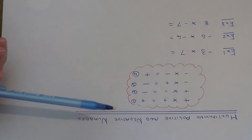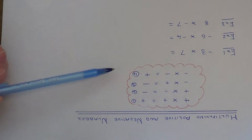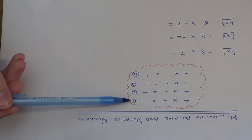Today I'm going to show you four rules which you can use to multiply positive and negative numbers. So the first rule: